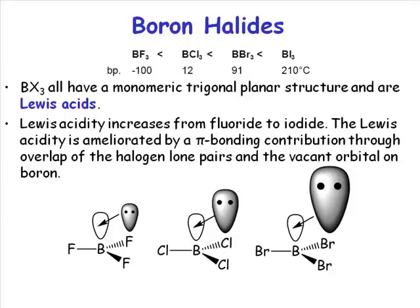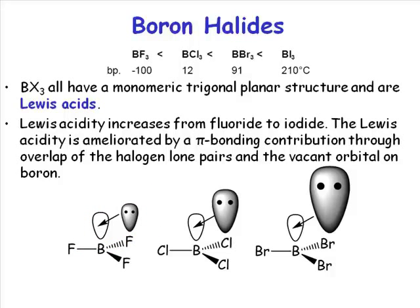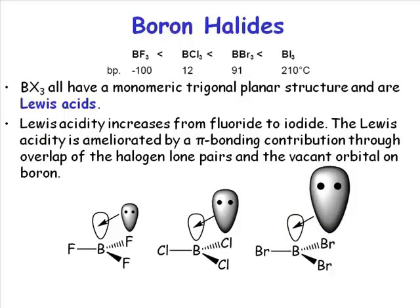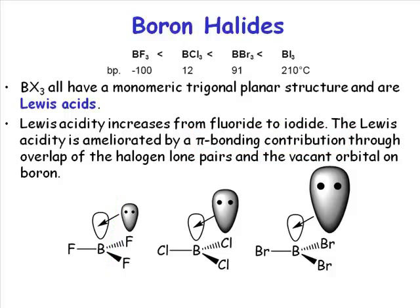Fluorine has three lone pairs, of which the one with the most obvious symmetry overlap has been drawn. If you have a fluorine lone pair with this symmetry and a P orbital with this symmetry, you can get overlap between these two orbitals to form a bond. It would not be a sigma bond — sigma bonds have cylindrical symmetry about the molecular axis. This bond is going to be a pi bond, because we have a nodal plane about the interatomic axis. So we have a pi-like interaction between the lone pair orbital and the vacant P orbital — a pi-bond type contribution to the boron-fluorine bond.